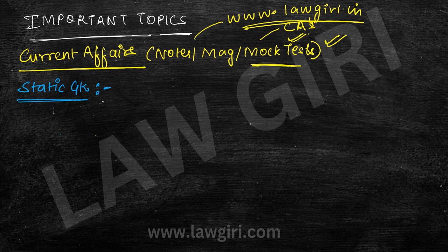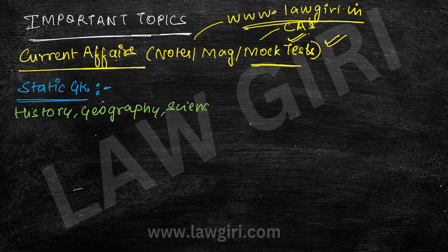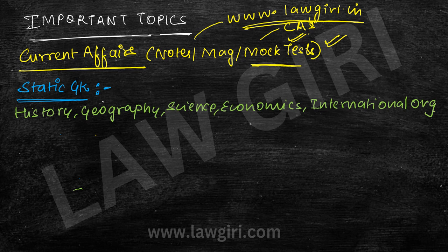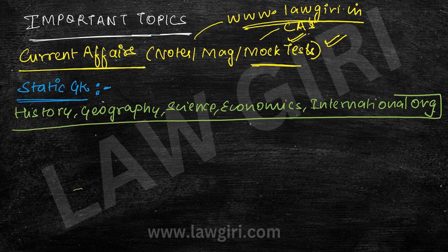For static GK, you will get important questions from history, geography, science, and economics. If you have anything pending in these subjects, you can read MCQs from any book. I've told you that any MCQ book will work, because if you take theory then you'll know what's important. So if anything is pending, please do it.